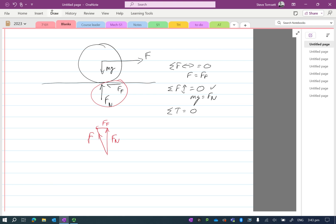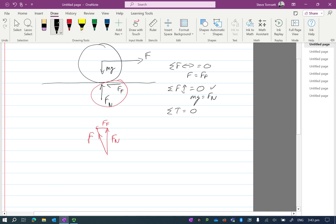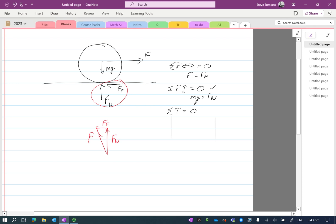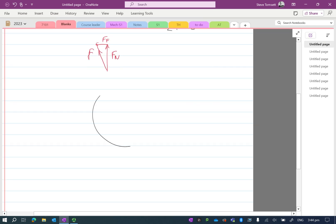So if I now redraw my free body diagram. My roller, my surface, gravity is acting at the center, applied force to make this thing slide.